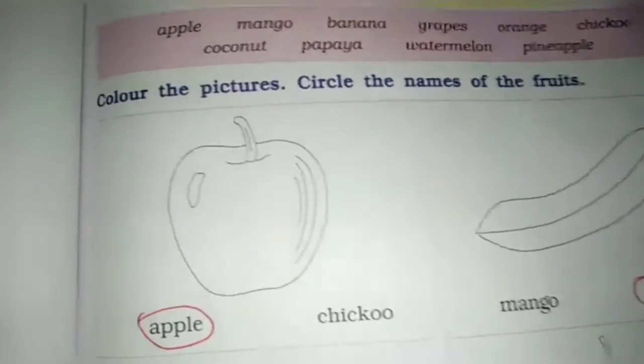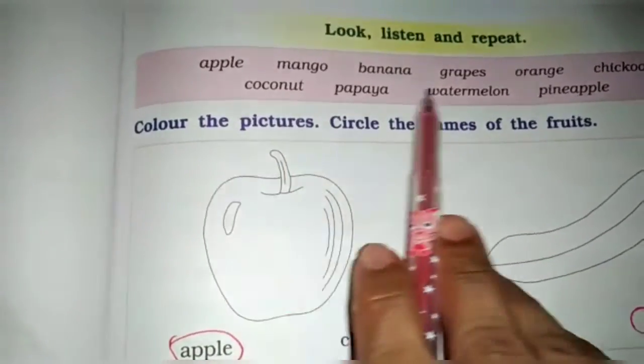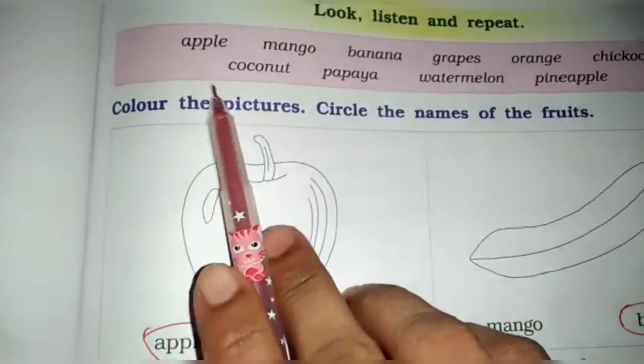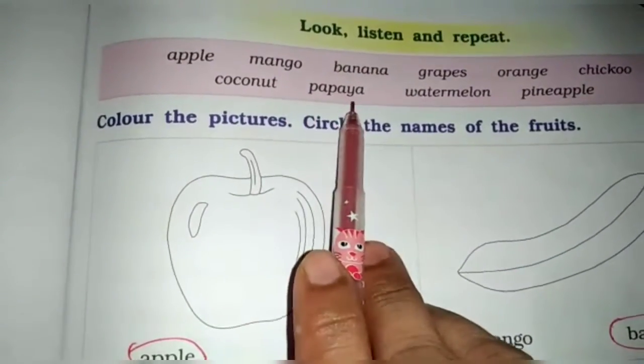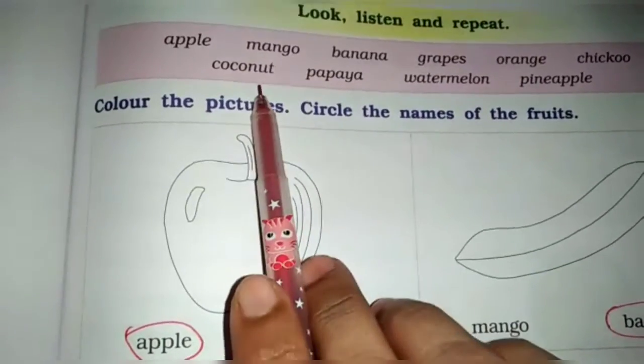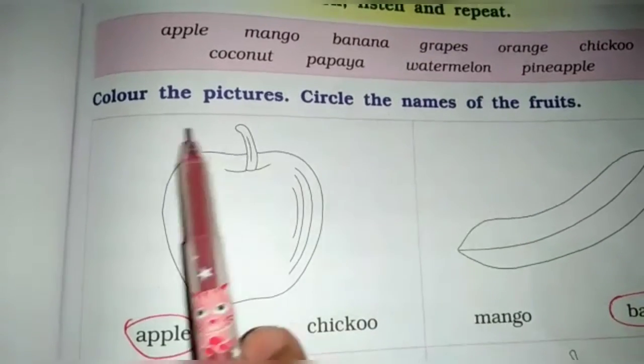Page number 95. Look, Listen and Repeat. These are fruit's name. Apple, Mango, Banana, Grapes, Orange, Chiku, Coconut, Papaya, Watermelon and Pineapple.